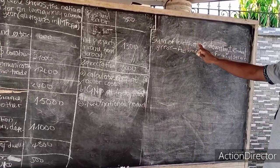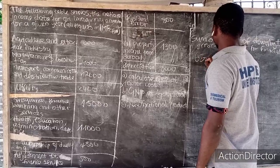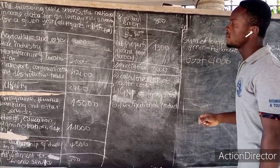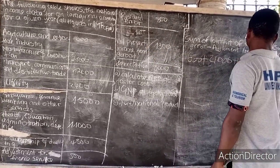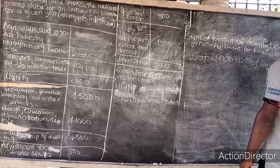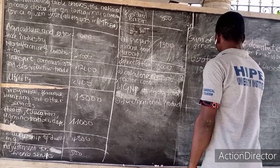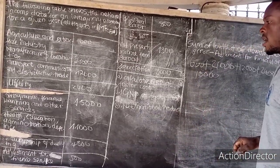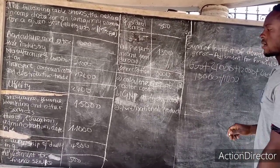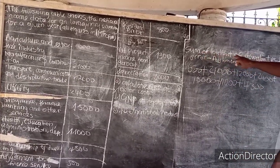Applying the formula, we take: agriculture = 600; plus manufacturing = 1,200; plus another component = 1,100 (sorry, 1,000); plus transport = 12,000; plus utilities = 2,400; plus insurance = 15,000; plus health and education = 11,000; plus ownership of dwellings = 4,300. That covers the sum of output including dwellings.